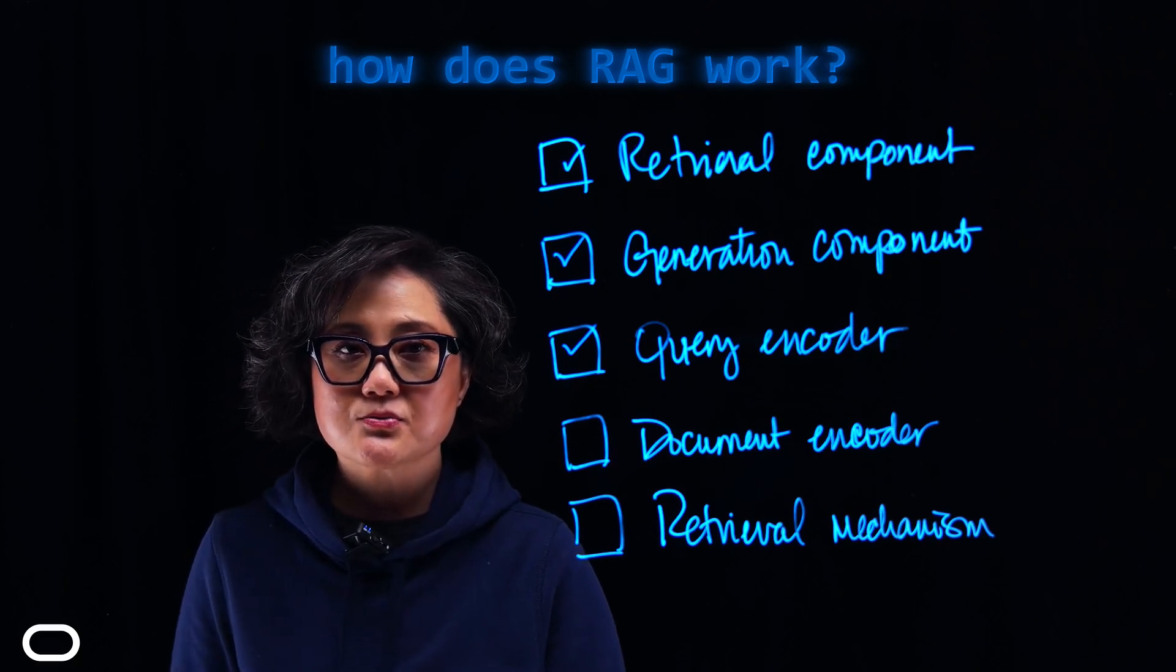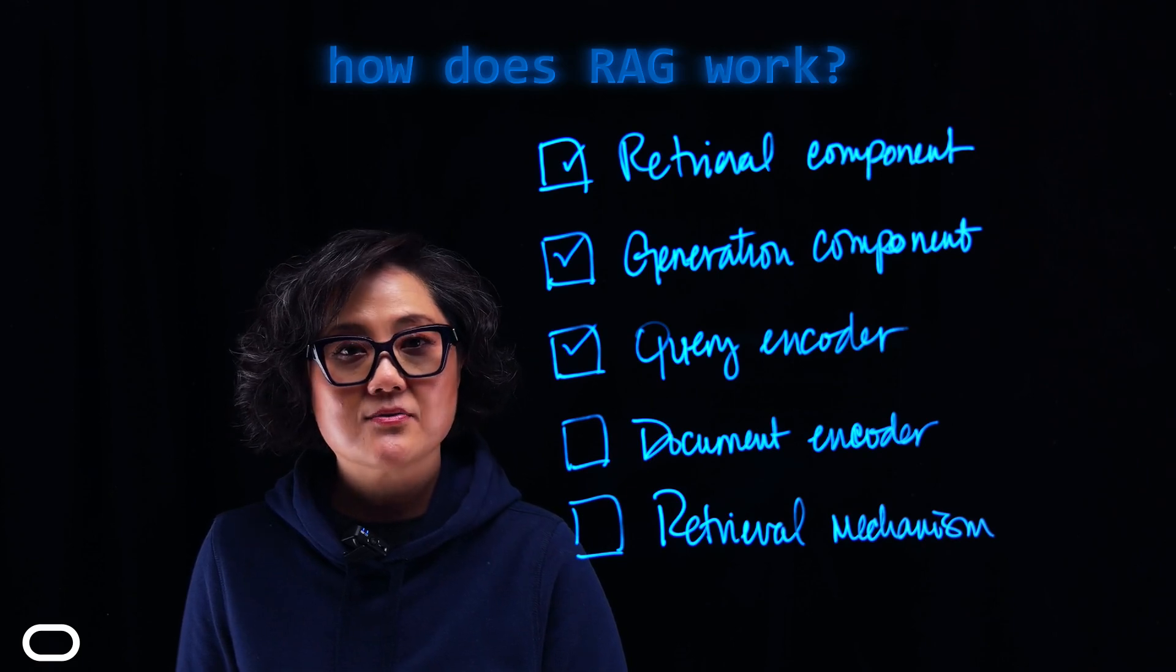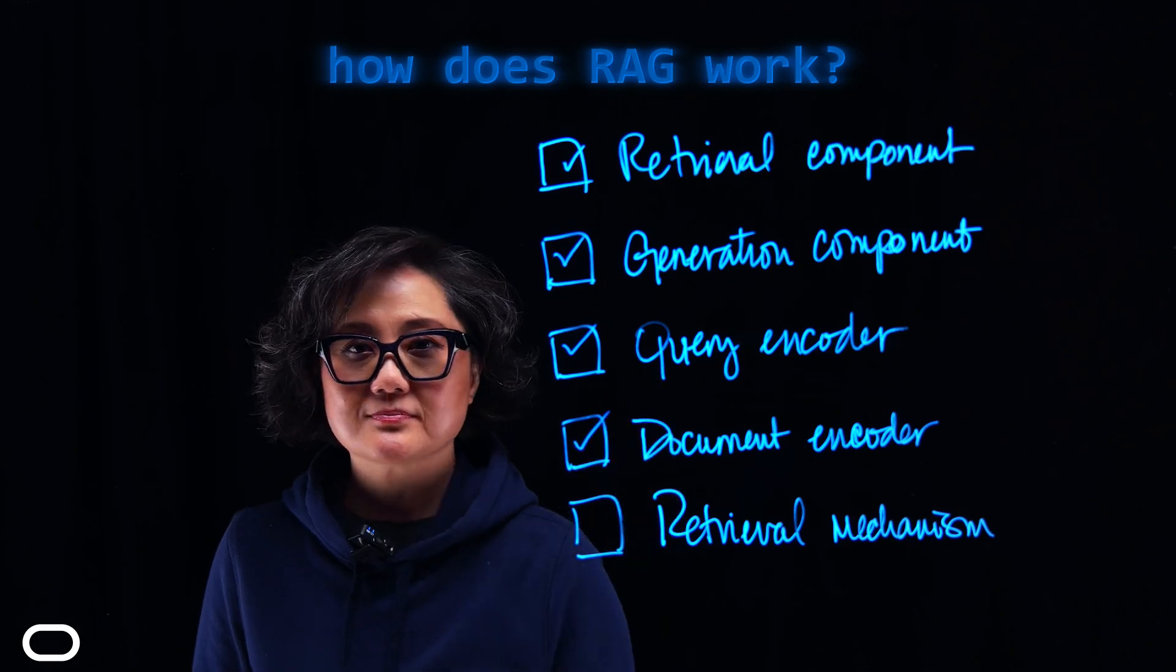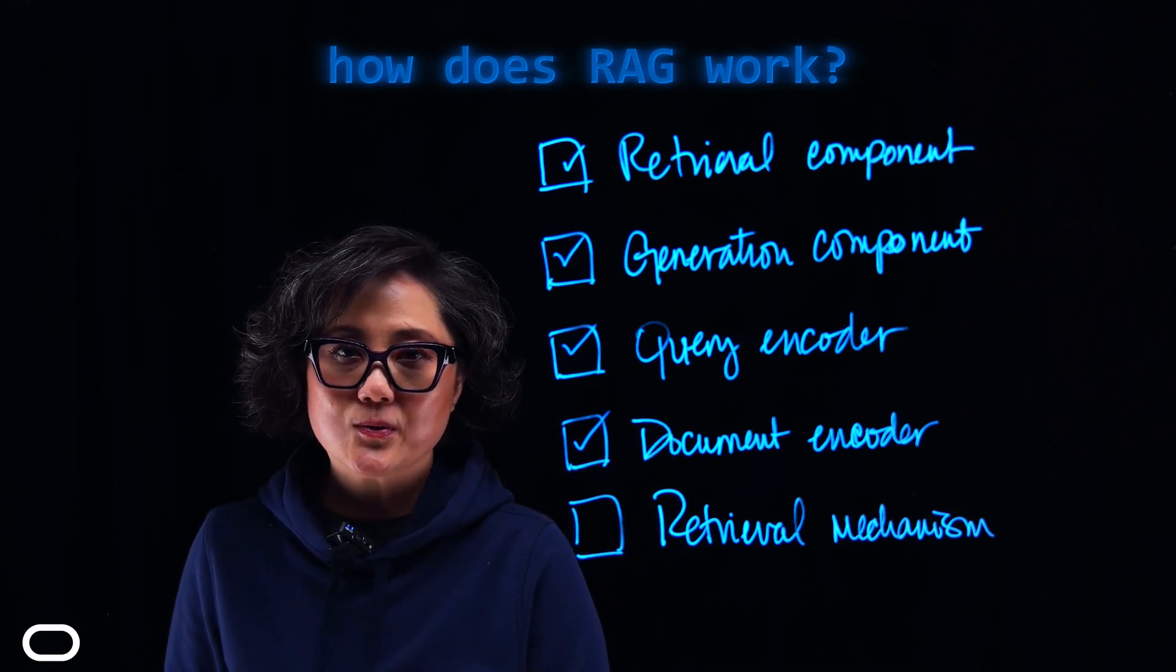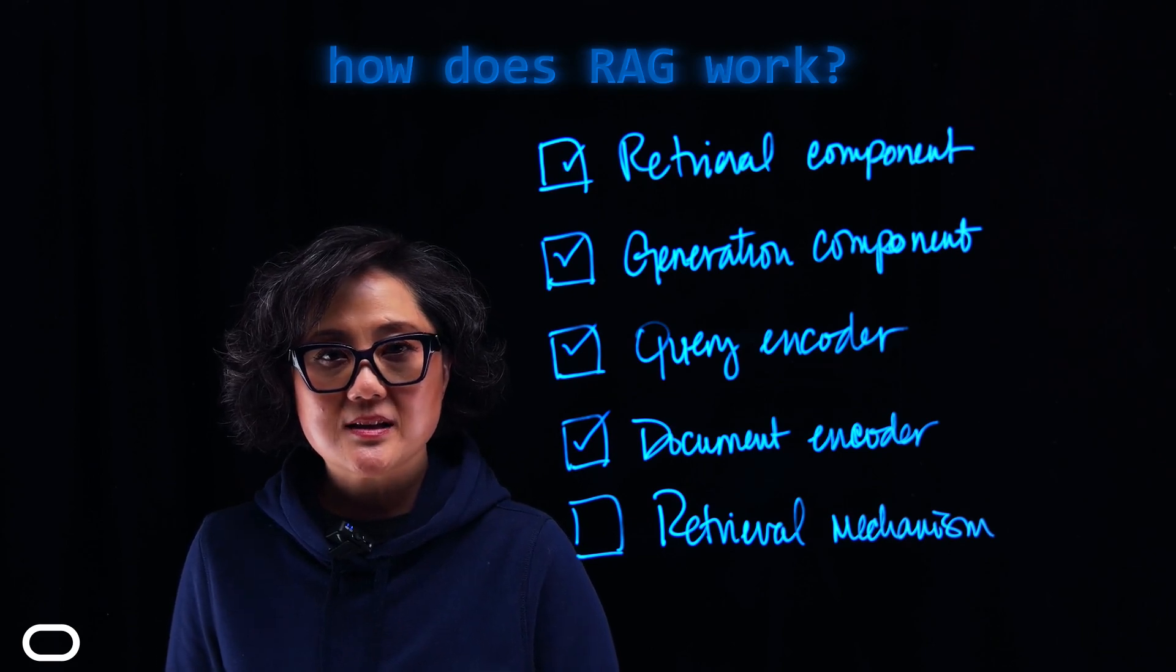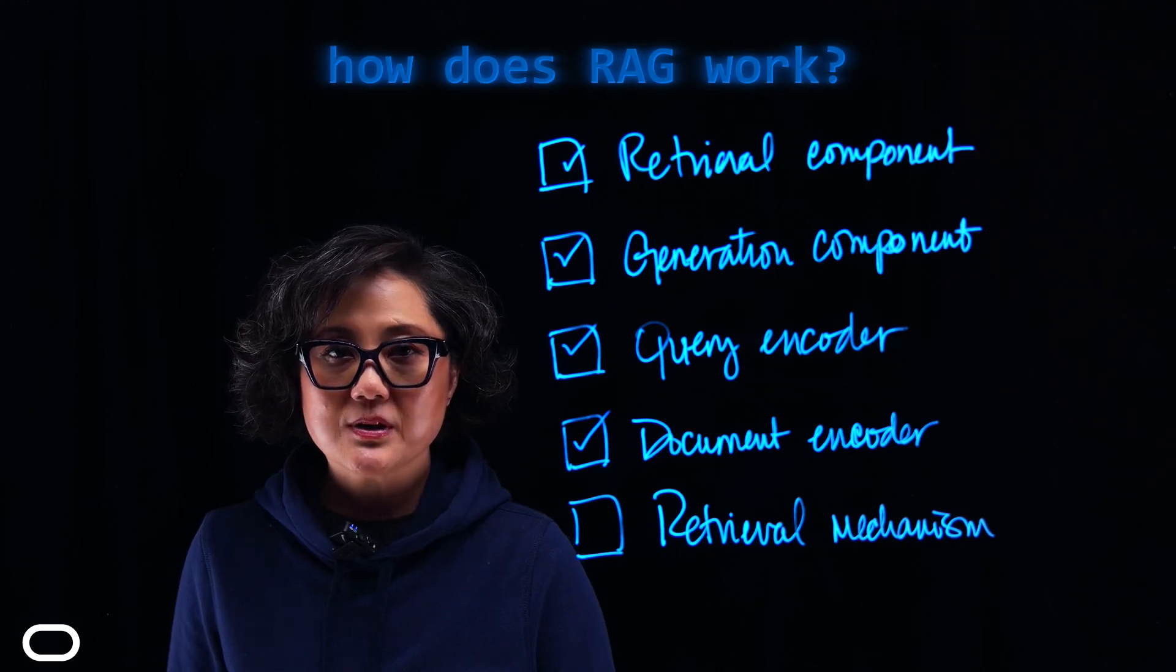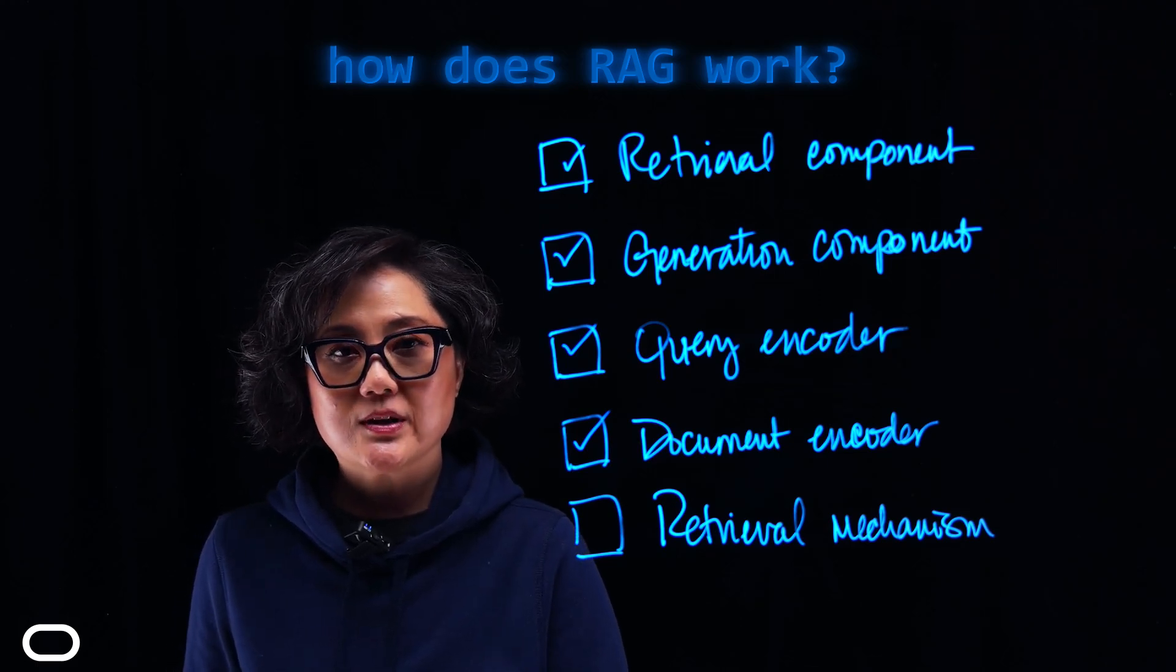Next is the Document Encoder. Document Encoder is a neural network that encodes documents from the index into dense vector representations that are used to compute similarity with the query vector.